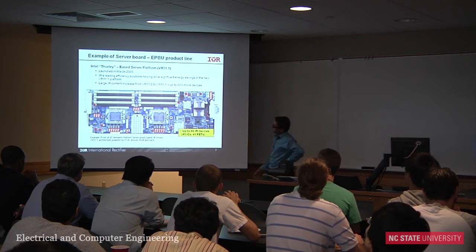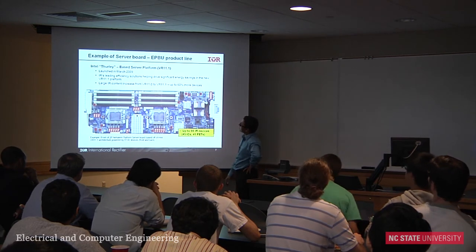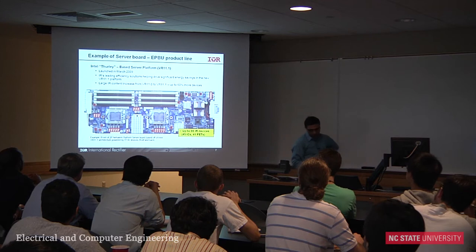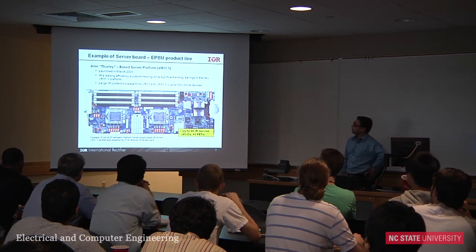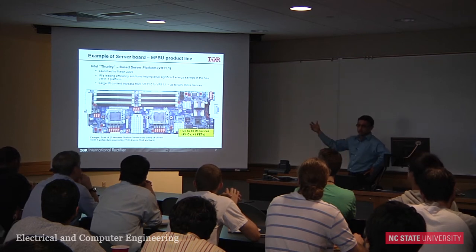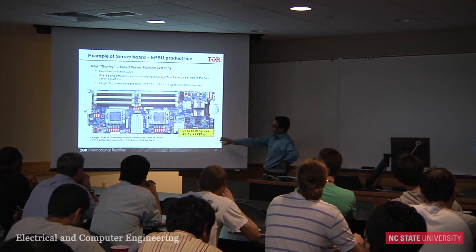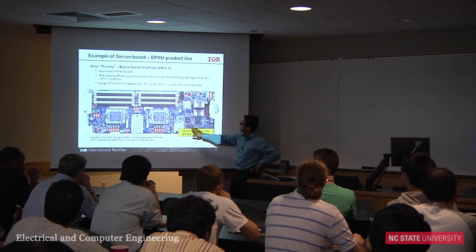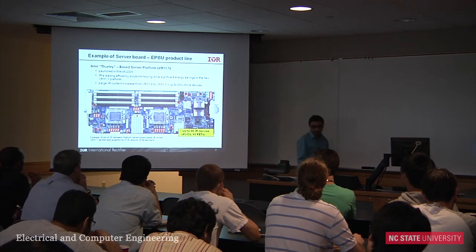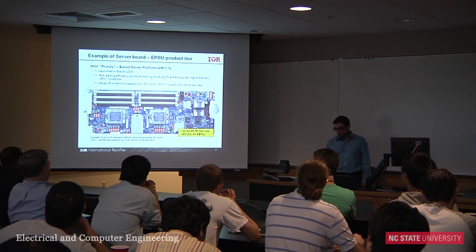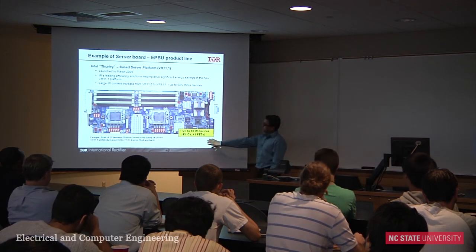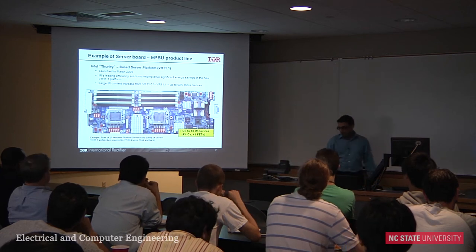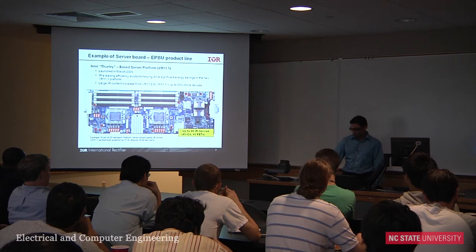Here is an example of a server board where IR currently has 86 devices. This is VR11.1 — if you follow the Intel platform, they have voltage regulation platforms going from VR1 up to VR11, with VR12 as the next generation. IR doesn't only provide the FETs, which have been their strength, but also a lot more ICs. Out of 45 ICs, several were designed by me or my group here in Research Triangle Park.